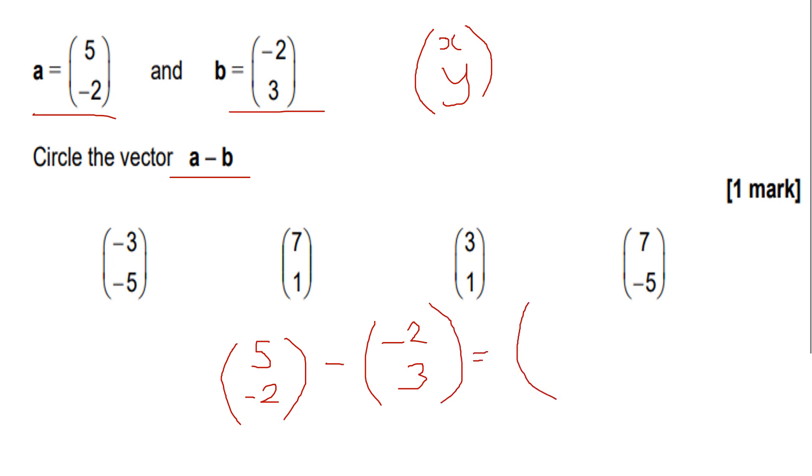Five subtract negative two is five plus two, which is going to be seven. Negative two subtract three is negative five. So our answer is going to be option number four. That's how to answer column vectors.